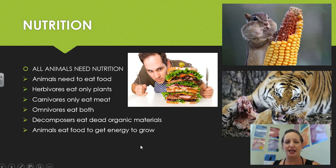Decomposers eat dead organic materials like rotting leaves or rotting food or rotting insects. Animals need to eat food to get energy to grow.